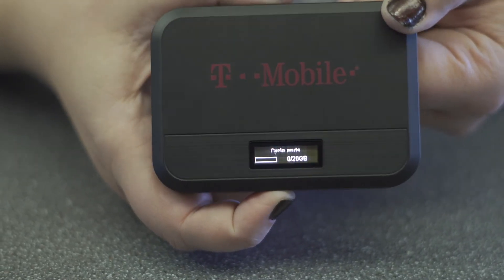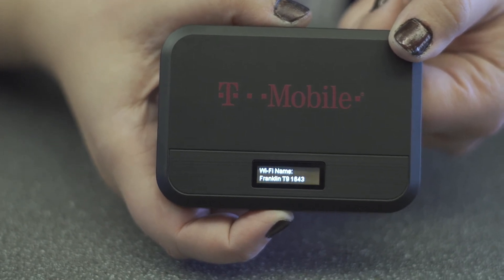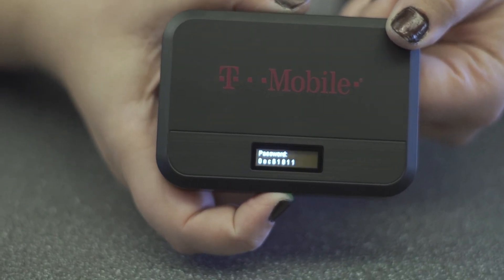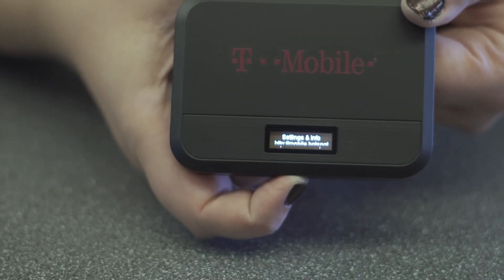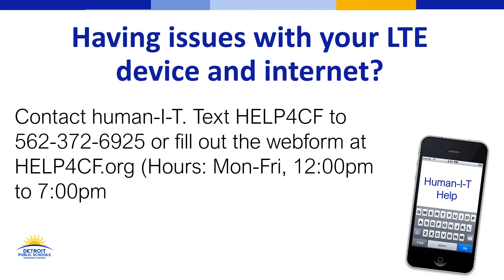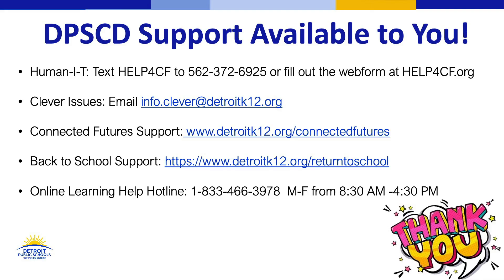Once the hotspot device is on, families can cycle through a navigation key which will display the home screen, data use, wi-fi name, password, and a web address, then cycle back to the home screen. If you are having any issues with your LTE service or need access to low-cost internet options, contact Human IT by texting HELP4CF to 562-372-6925 or fill out the web form at help4cf.org — hours are Monday through Friday from 11:30 to 7:30. Thank you so much for joining me today and taking time to learn about our district technology. Support is always available to you.